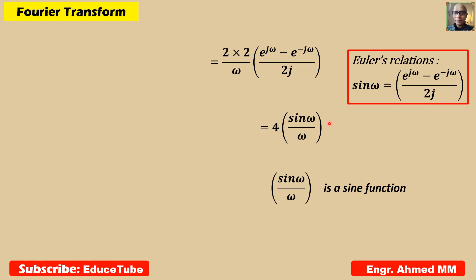If we want to make the graph for this, it is a sinc function. Sine omega by omega is a sinc function, and the graph looks like a sinc function.